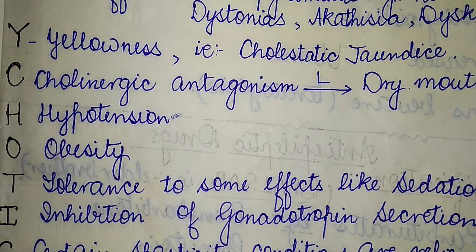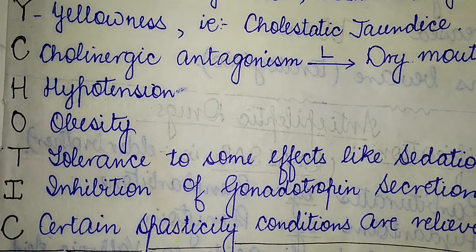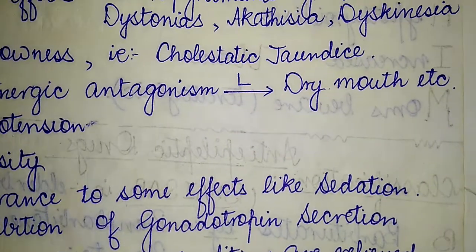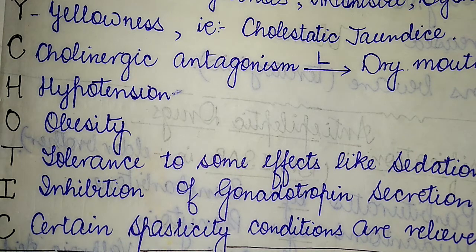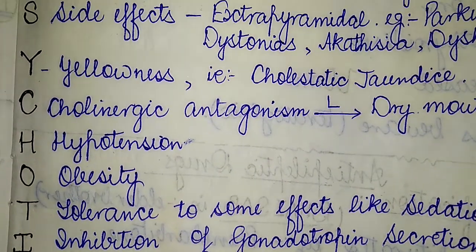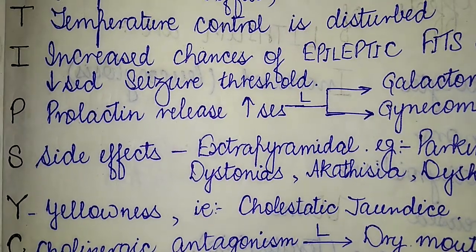The last C of anti-psychotic corresponds to the use of anti-psychotic drugs in treating certain spasticity conditions — certain spasticity conditions are relieved due to the use of anti-psychotic drugs. This completes all the effects categorized under the anti-psychotic mnemonic.